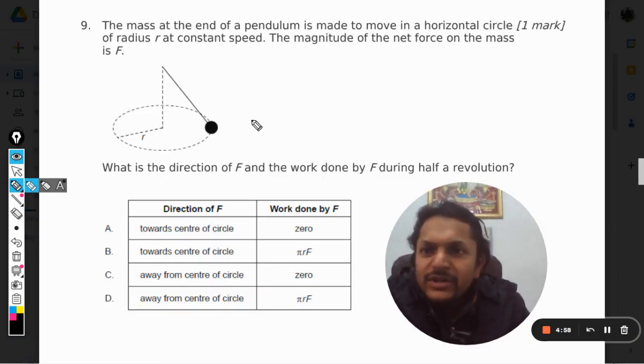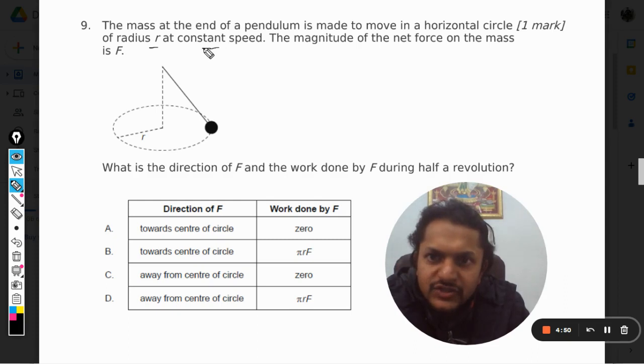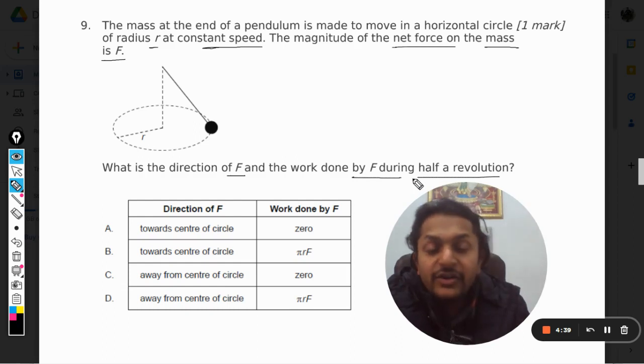Okay students, let's see what is in this question. The mass at the end of a pendulum is made to move in a horizontal circle of radius r at constant speed. The magnitude of the net force on the mass is F. What is the direction of F and the work done by F during half a revolution?